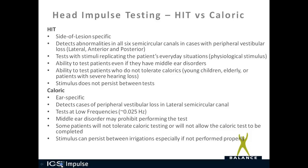The head impulse test has the ability to test patients even if they have middle ear disorders. With calorics, if the patient has a middle ear disorder, it may prohibit performing the test, because when assessing unilateral weakness both ears need to be anatomically similar — you can't have one with middle ear effusion and one without, or one with a mastoidectomy and one without. With head impulse testing, you can do the test regardless of middle ear disorder in one or both ears.